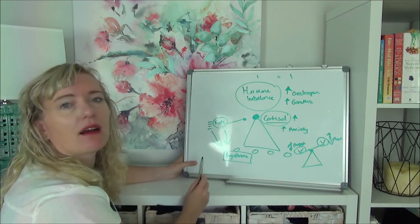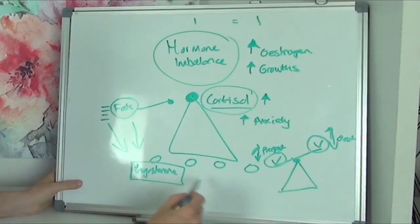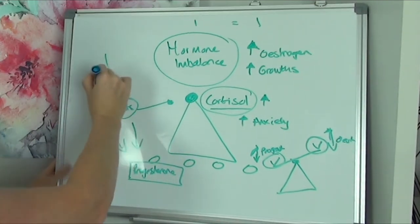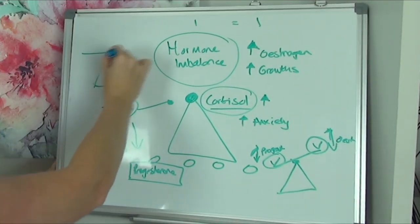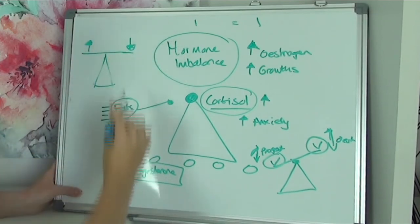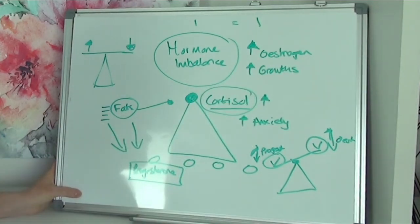Your body's able to go, oh fantastic, I have enough to make the progesterone. Thereby, you're going to have more progesterone, which is going to drive down the estrogen, which is thereby going to alleviate the amount of growths that are happening with endometriosis.